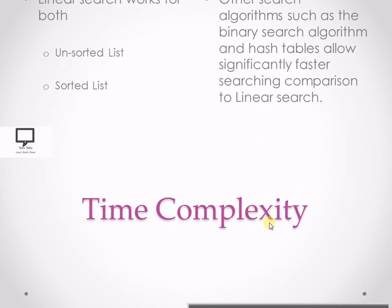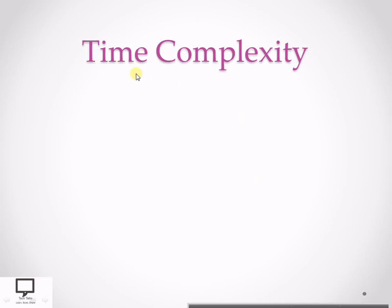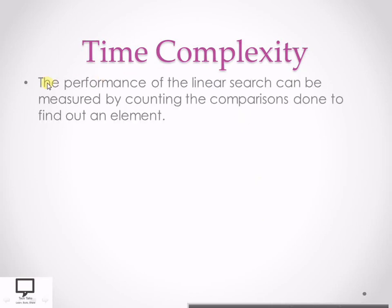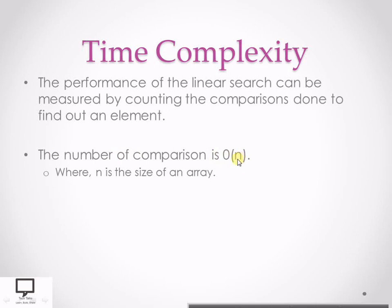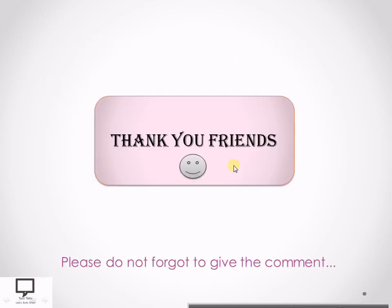The performance of linear search is measured by counting comparisons done to find a particular element. The time complexity for a linear search is O(N), where N is the size of the array. In the worst case, if there are 10 elements, it will take 10 comparisons — as all 10 elements are compared for an unsuccessful search.